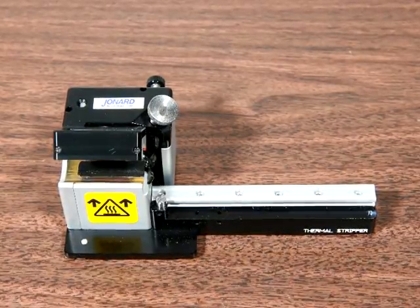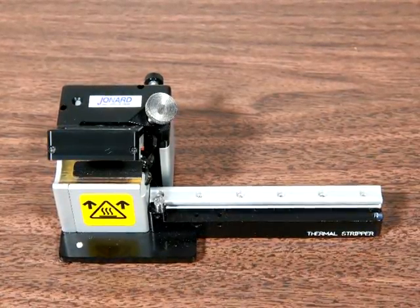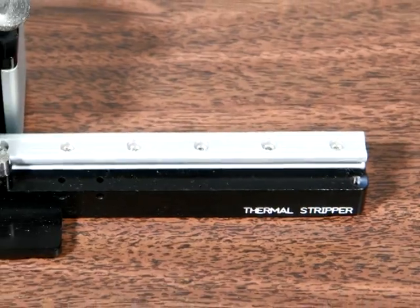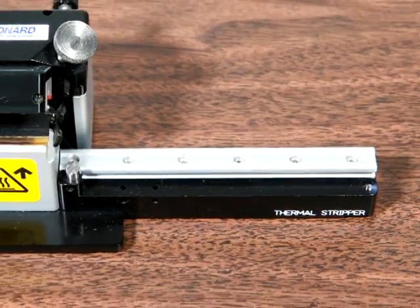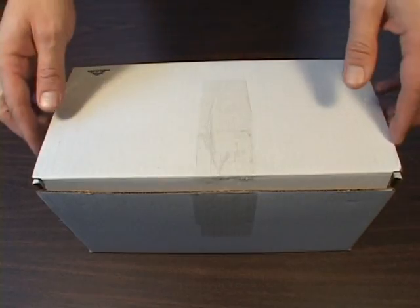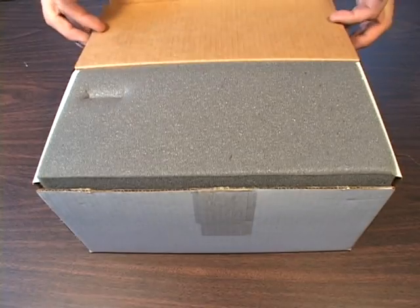The Jonard TSAB40 thermal stripper thermomechanically removes coatings from optical fibers with cladding diameters from 40 to 1000 microns with coating diameters up to 1200 microns. Each thermal stripper kit contains a user manual,